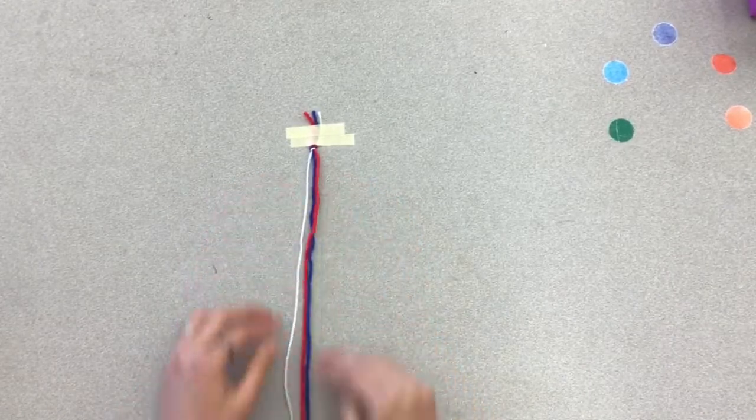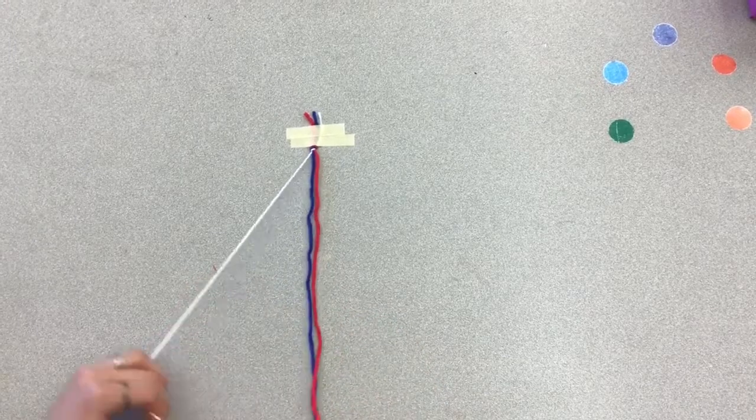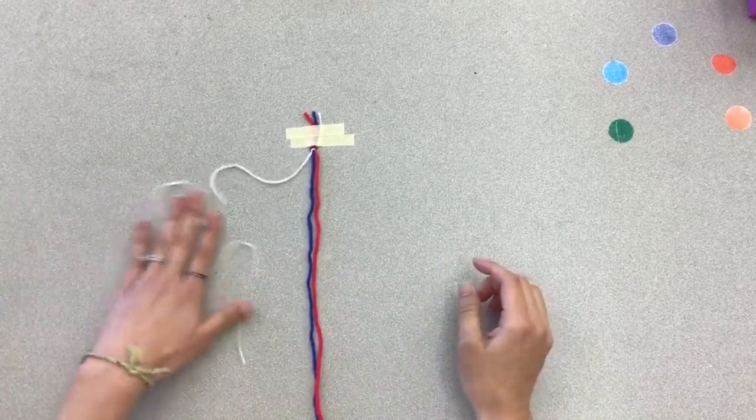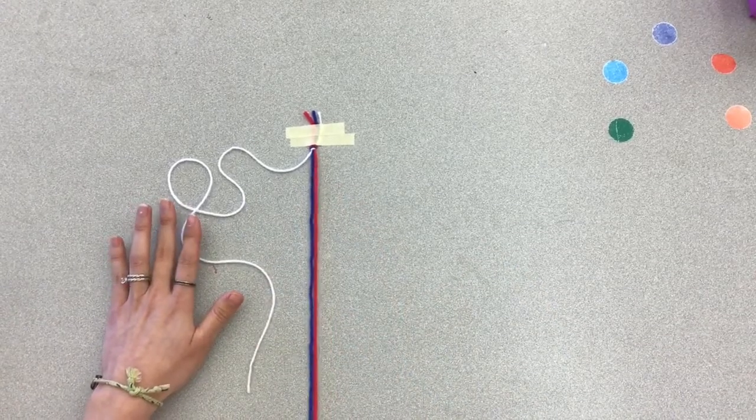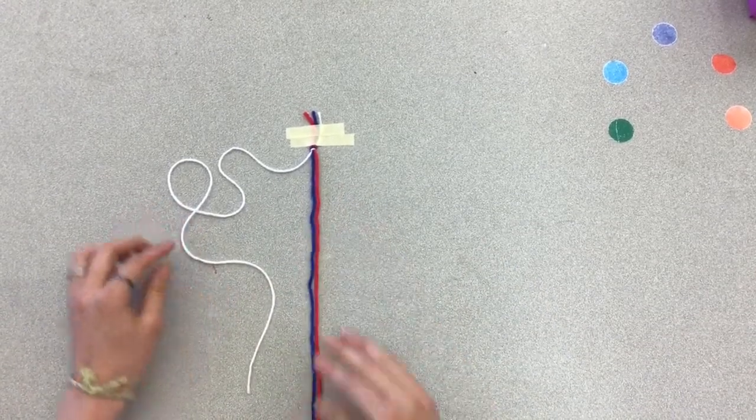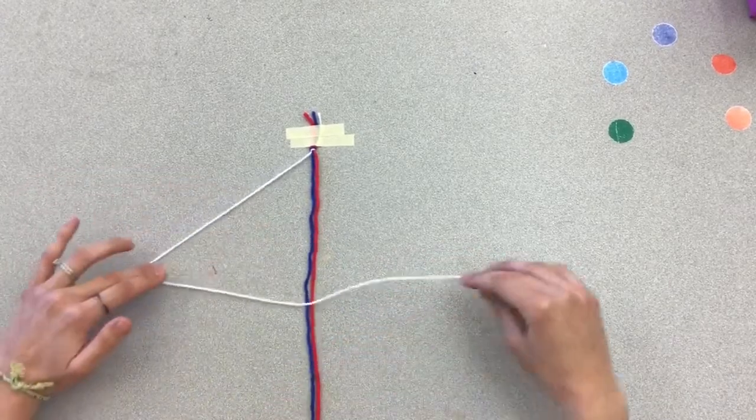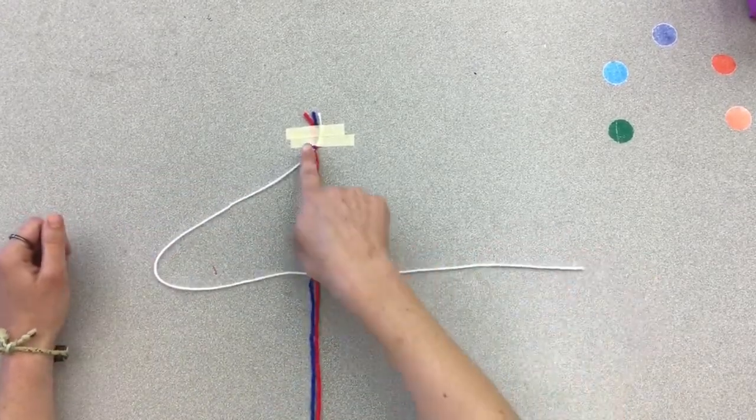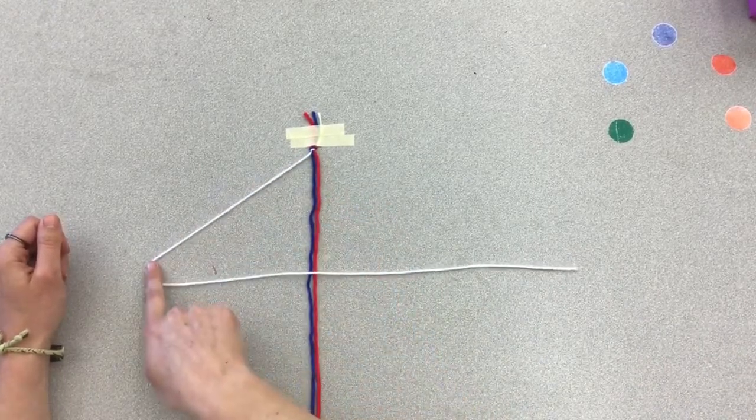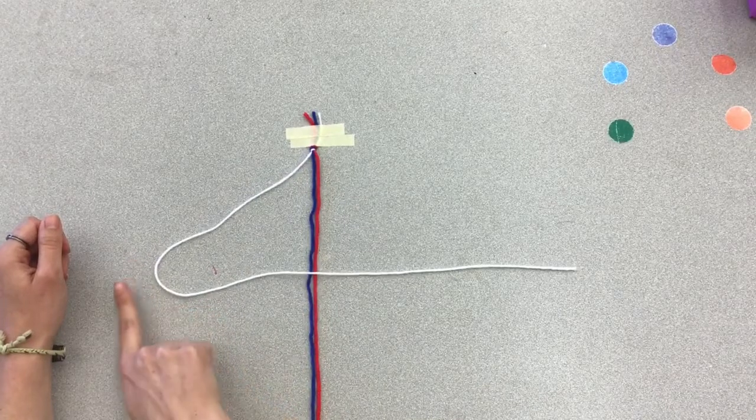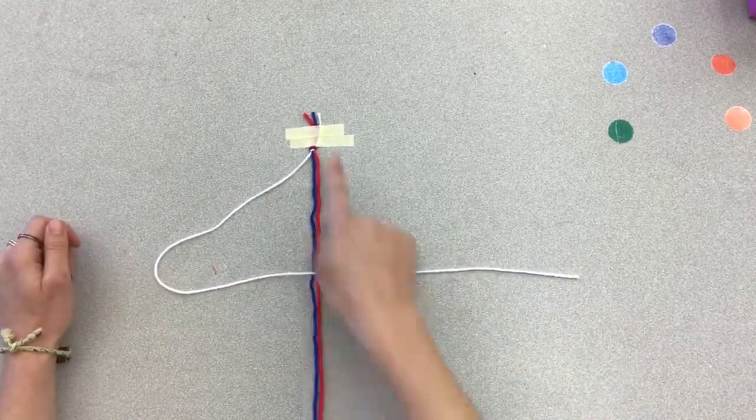Then you're going to be using these colors to build your bracelet. Start by selecting one color you want to start with. I chose the white and I have the blue and the red laying straight down in front of me. Then you're going to take this white string and you're going to turn this into the number four. So this is the straight line of the four and then I have an angle out that goes at a diagonal and then a straight horizontal going across. It looks like the number four.